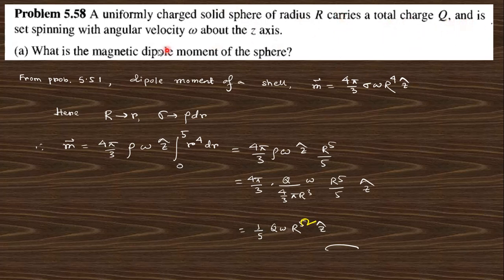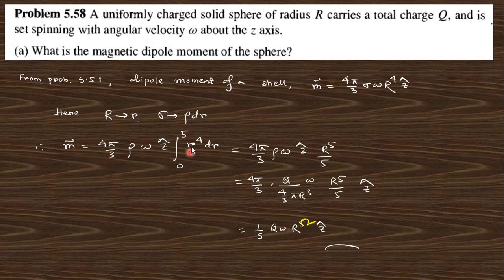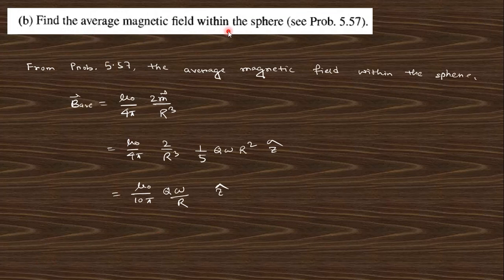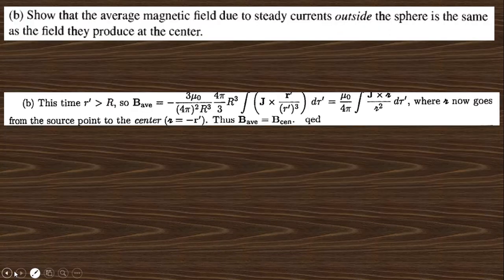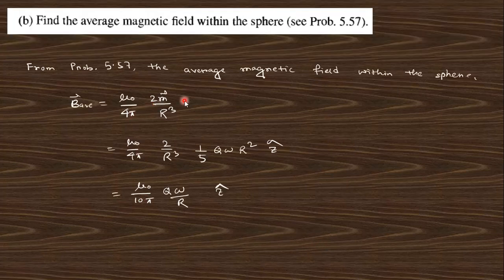Next: a uniform charged solid sphere of radius R, total charge q, spinning — this is problem 5.57 part (b). The magnetic dipole moment of the sphere is given. The surface charge density is converted into volume charge density to get this expression. Substituting and integrating gives the dipole moment m. The average magnetic field within the sphere is then calculated by substituting this value of m into the average field formula.